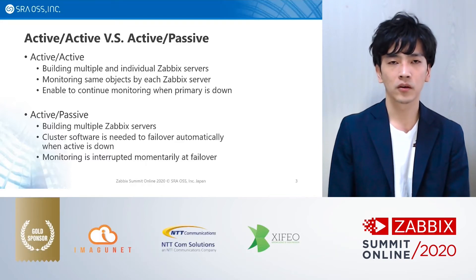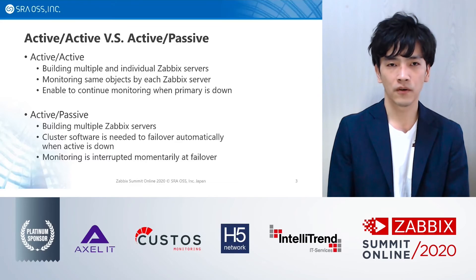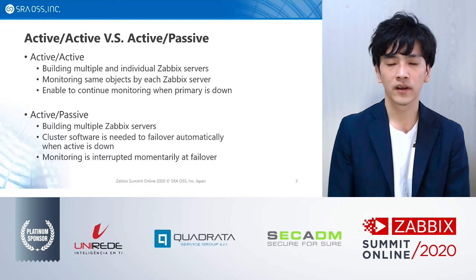In an Active-Passive Cluster, you build multiple Zabbix servers, but only one server runs among them. If the running Zabbix server goes down, a failover occurs and another server starts via cluster software. As a result, monitoring is continued, but interrupted momentarily during failover.